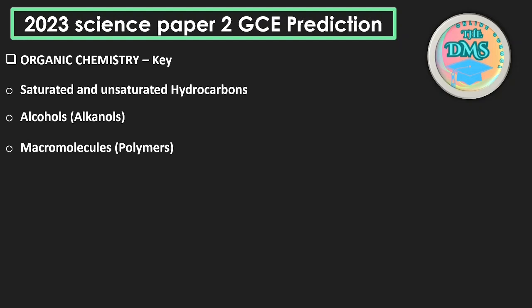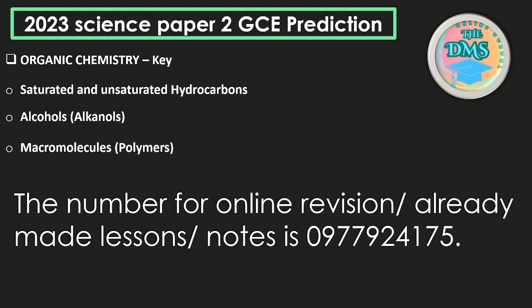The number for online revision or already-made lessons is 0977 924 175. If you have not been learning and feel behind, I encourage you — better late than never. You can acquire the videos for Science Paper 1 and Paper 2 from grade 10 to 12 at a promotional price of 240 kwacha. This promotion runs from today, Sunday, through to Friday next week.